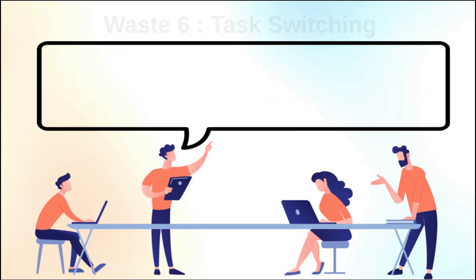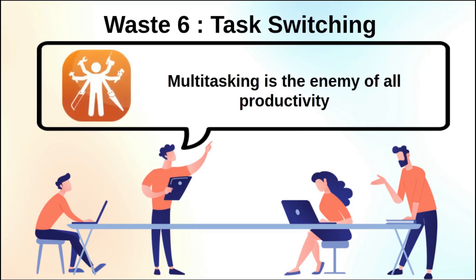The sixth waste is task switching. This comes up a lot in DevOps, where people are getting context-switched or interrupted and they can't finish their work. Research has demonstrated over and over again that task switching, often referred to as multitasking, is the enemy of all productivity in software development or otherwise. It's really only recently that people are questioning multitasking as a benefit.